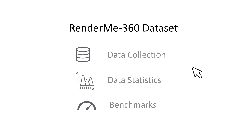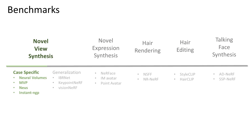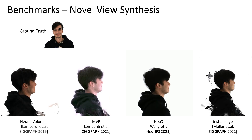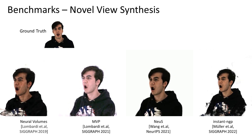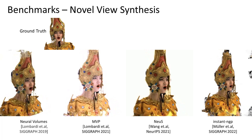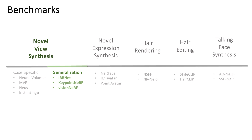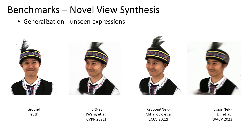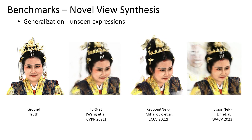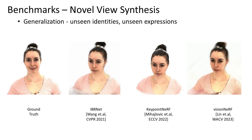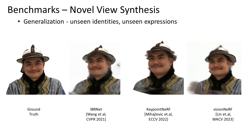We evaluated our dataset with quantitative and qualitative results to serve as benchmarks for future research. For novel view synthesis, methods are split into two groups: case-specific and generalization. For case-specific tasks, the same subject is used for training and testing with unseen expressions — NeRF shows smoother and cleaner results and outperforms other methods. For generalization tasks, the test set contains seen subjects with unseen expressions and unseen subjects. All three methods could synthesize reasonable novel expressions for seen identities, with Keypoint NeRF achieving the best performance in the face region. For unseen identities, performances are quite similar, implying these methods are robust.